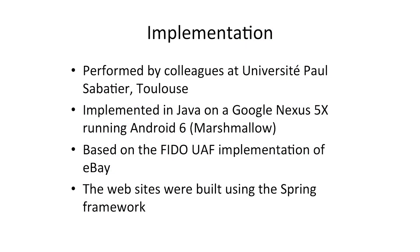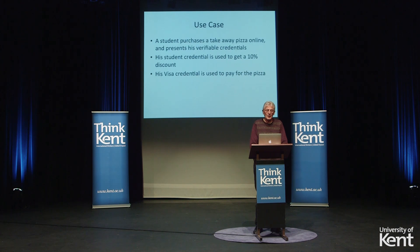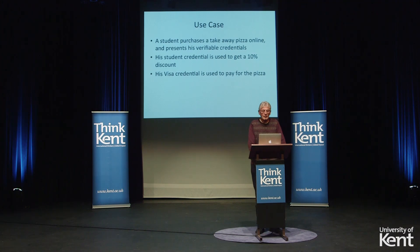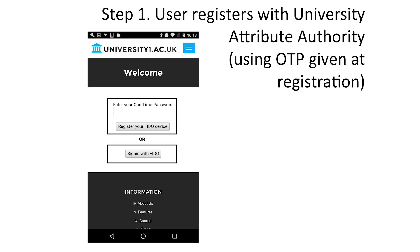This has been implemented by colleagues at the University Paul Sabatier in Toulouse, whom I've been working with for a number of years. They've implemented it on the Google Nexus 5X phone using Android 6, based on software provided by eBay and using the Spring framework. I'm going to show you how it works in practice using a typical use case: buying a pizza from a takeaway shop and getting delivery to student accommodation, proving online that you are a student at the University of Kent and that you can pay.